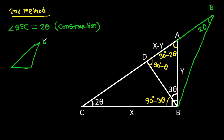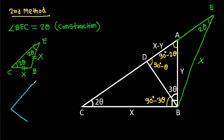Then in triangle EBC, these two angles are equal — both are 2 theta — which means BC equals BE. Since BC is x, therefore BE equals x.